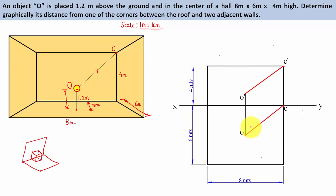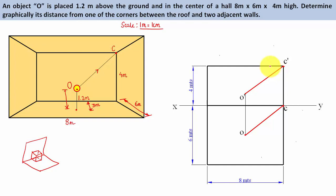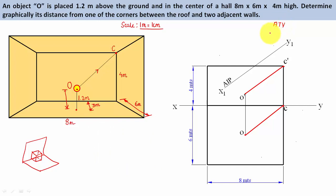Now, to find the true length between the object and corner, earlier we used to rotate either the front view or the top view to make it parallel to the XY line. But in today's lecture we're going to do something different. Rather than changing the position of the object, we'll use an auxiliary inclined plane parallel to the line OC — in this auxiliary inclined plane we'll get the auxiliary top view.